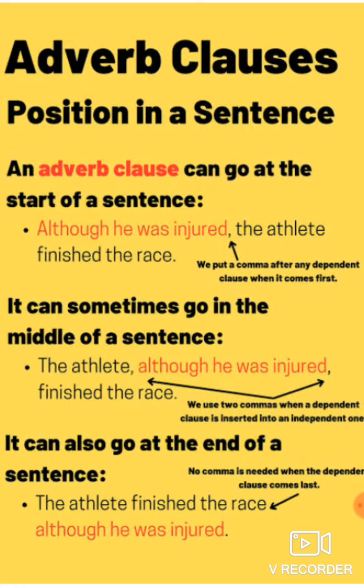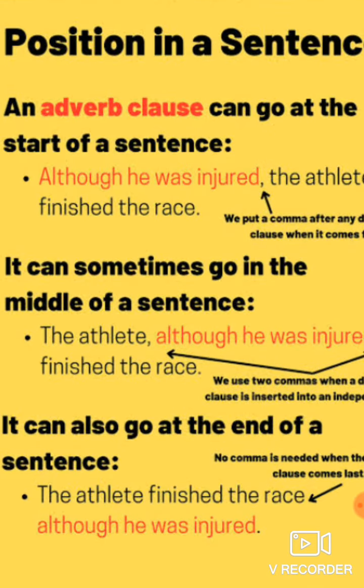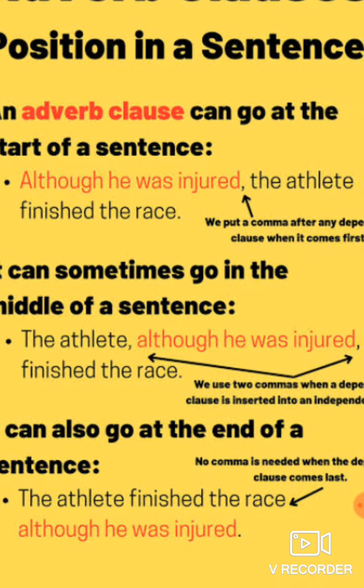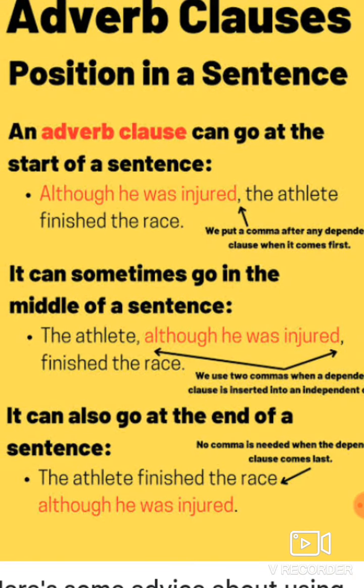It can sometimes go in the middle of the sentence. Like: 'The athlete, although he was injured, finished the race.' Here we have used two commas when a dependent clause is inserted into an independent one. If the main clause is divided — like 'the athlete finished the race' — and in between we have a subordinate clause, then again we have the main clause, so we use two commas to identify it clearly.